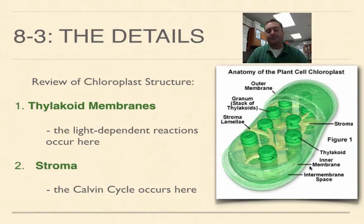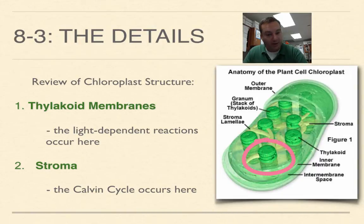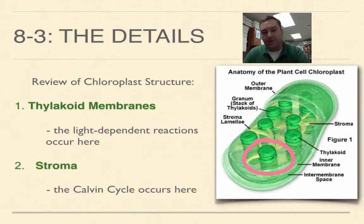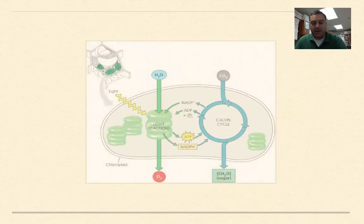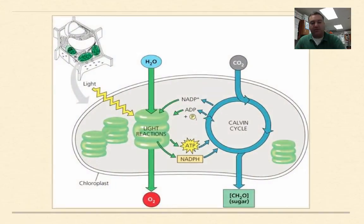All of this happens inside an organelle called a chloroplast. The chloroplast has two main parts: the thylakoid — those little green poker chips where the chlorophyll is located and where the light-dependent reactions occur — and the stroma, which is the fluid surrounding the thylakoid membranes, where the Calvin cycle takes place and sugar is made.